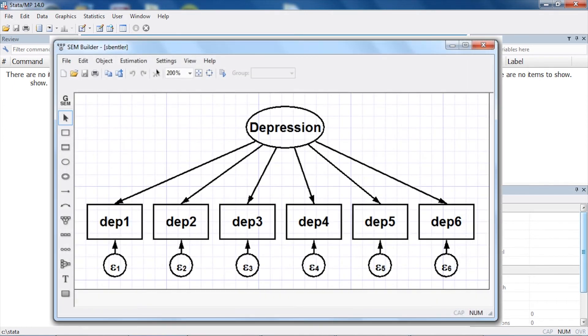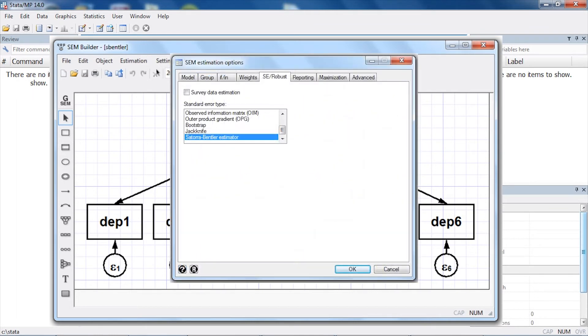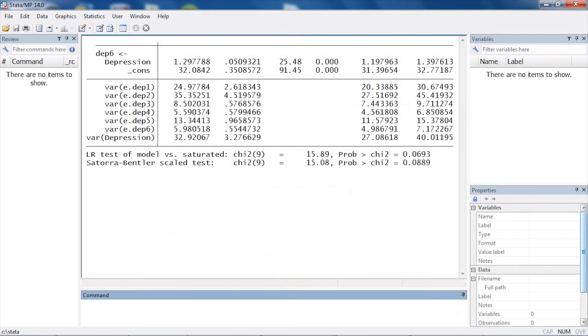The Satora-Bentler Scaled Chi-Squared Test is robust to non-normality, and you can calculate it by specifying the Satora-Bentler Estimator in the SE Robust tab of the Estimation dialog box.